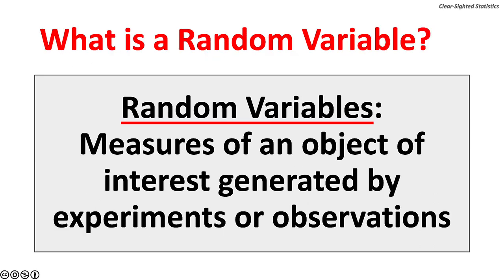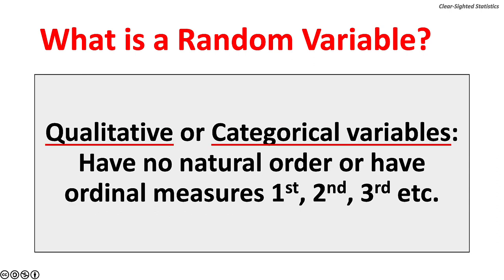What is a random variable? Random variables are measures of an object of interest generated by experiments or observations. Random variables can be qualitative or categorical variables. When they are nominal variables, they have no natural order. Or, when they are ordinal variables, they can be ranked as first, second, third, etc.